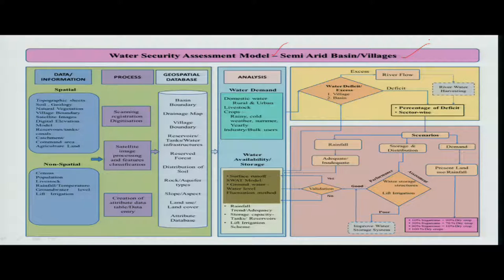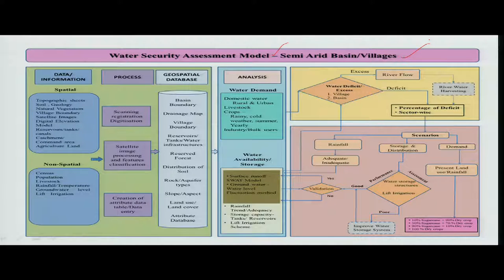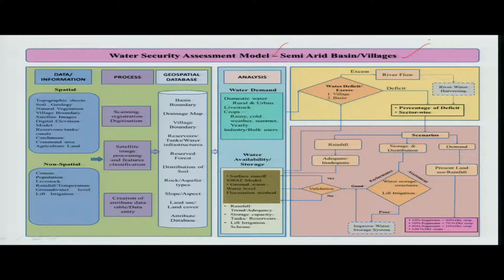This shows geospatial information and information collection about the water available, including surface runoff. We are combining all the things to determine how much is the water security — whether it is a positive or negative condition. This is done by analyzing the water availability, storages, rainfall information, and demand information, as well as whether water storage structures are good or bad and need to be understood.